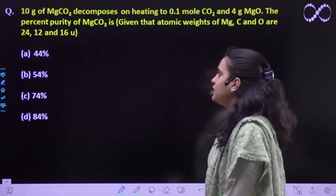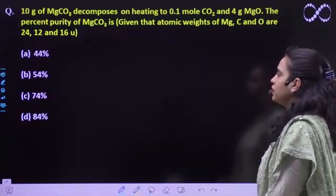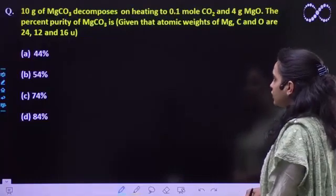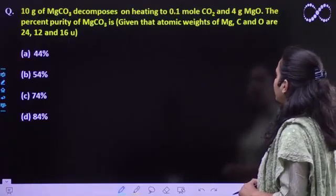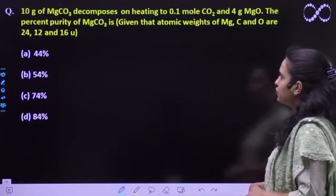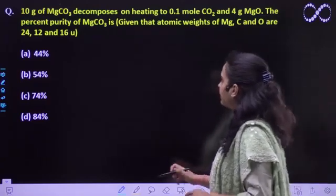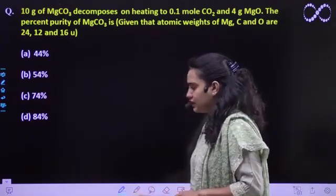Hello students, the question is saying 10 gram of MgCO3 decomposes on heating to 0.1 mol CO2 and 4 gram of MgO. The percent purity of MgCO3 you have to find, given that the atomic masses are Mg 24, C 12, and O 16.